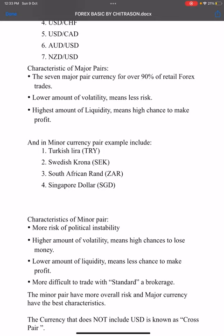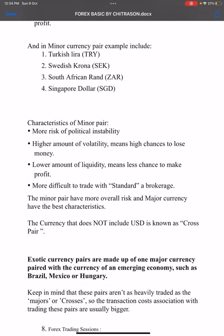A minor currency is an example like the Turkish Lira (TRY), South African Rand, and Singapore dollar. Minor currencies have more risk of political instability, potentially high risk which means higher chances to lose money, and a low amount of liquidity. This means it becomes more difficult to trade, with standard broker costs higher. Minor pairs have more overall risk compared to major currencies.